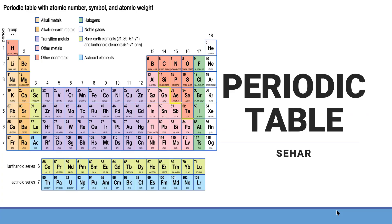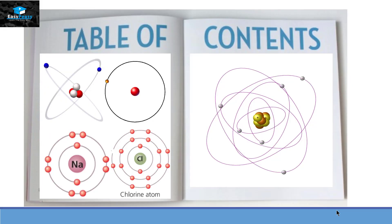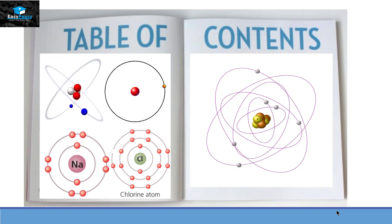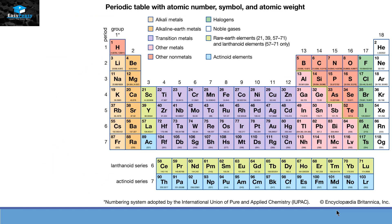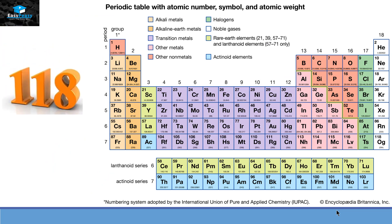Hello, this is Seher from EZPZ and the topic we are going to discuss today is called the periodic table. The periodic table is basically a table showcasing all the elements that are discovered up till now. So up till now, there are 118 elements that have been discovered so far.